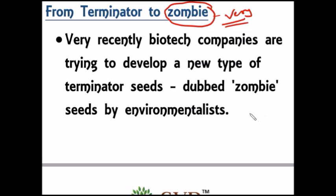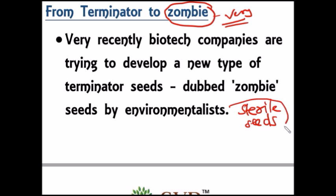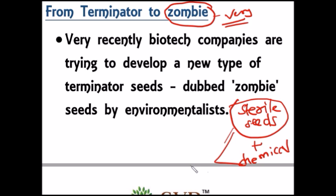Under Zombie Seeds Technology, Monsanto and similar biotechnology companies develop sterile seeds. To activate these sterile seeds, farmers need to add a chemical produced by the multinational company. So farmers have to buy both the sterile seeds and the activating chemical from the same company, which adds cost to the farmers.